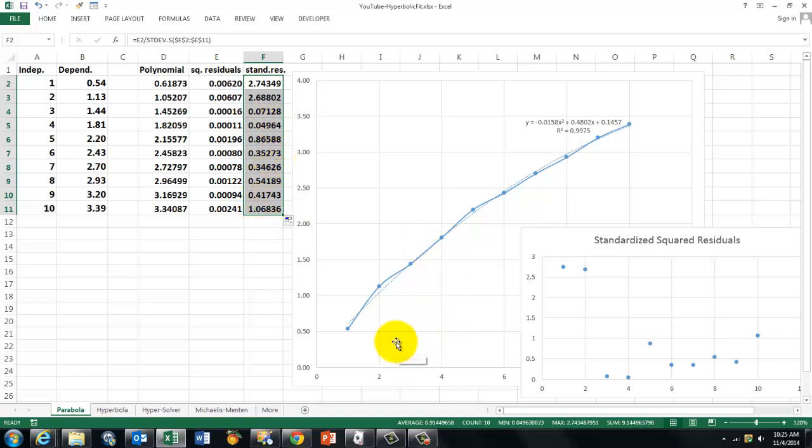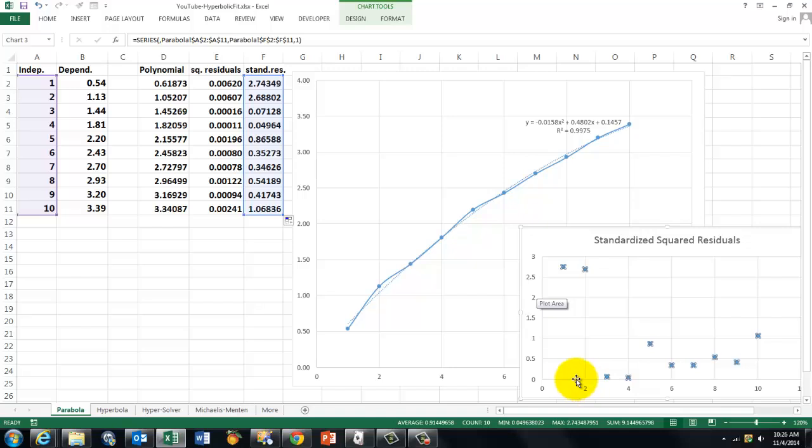And you do that for the entire column. And the best thing to do is make a new curve that is based on the independent variable and the standardized residuals. And plot them. That pattern should be more or less random. If there is a very clear pattern in there, then the polynomial curve fitting did not work too well.